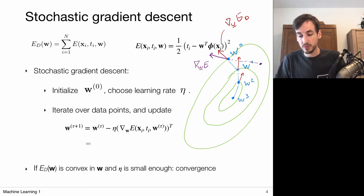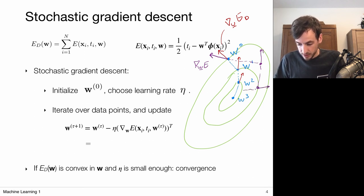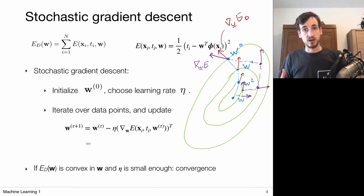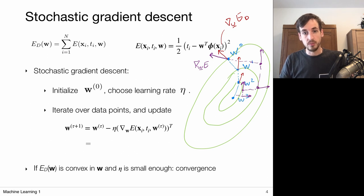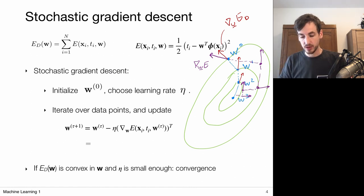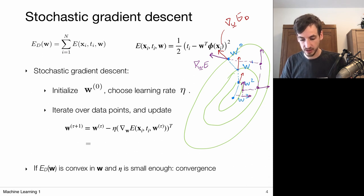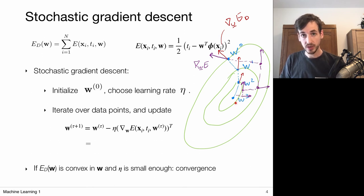If we compute the gradient with only one or a few data points, we get a noisy estimate and move somewhere roughly downhill. We then compute another noisy estimate, and another, and so on. These estimates are good enough — if the update step is small enough, we have the guarantee of converging to the global optimum. The update steps are noisy but, on average, they reliably move us downhill. This is the principle behind stochastic gradient descent.